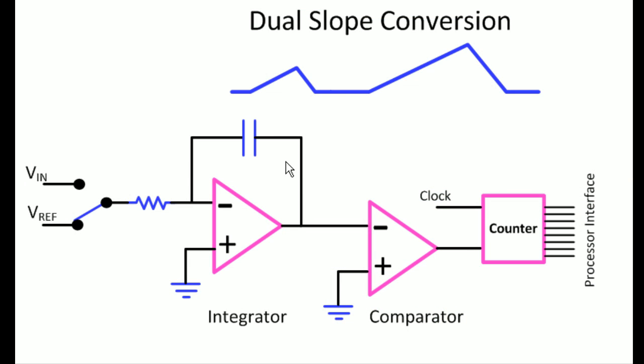And our last one today is the dual slope conversion analog to digital converter. I used to use this in instrumentation. I used to get like 18 to 20 bits out of it if we did everything very careful and just right.